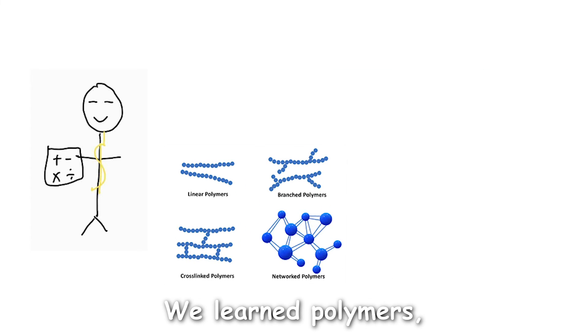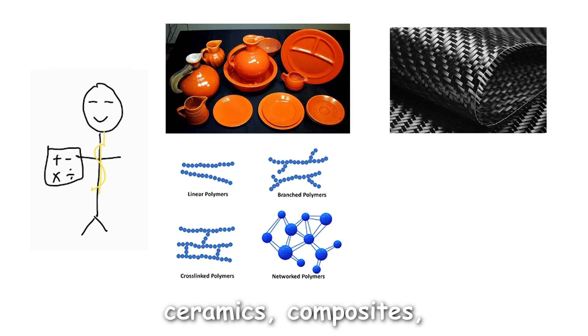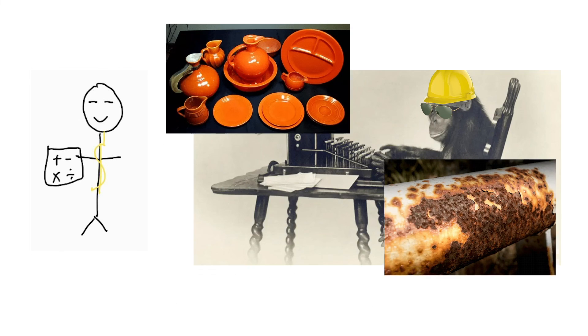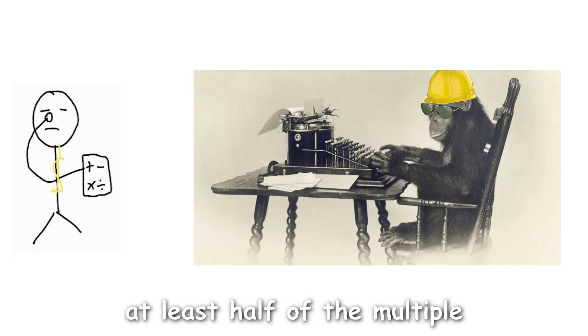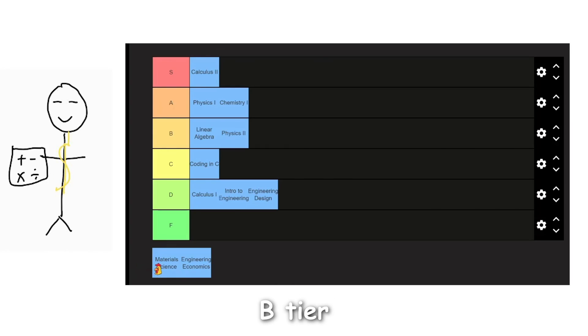We learned polymers, ceramics, composites, and corrosion. To be honest, with this class, you could study as much as you could, and you still wouldn't be able to learn everything in the course. The final exam was one of the most atrocious things I have written because I had to guess at least half of the multiple-choice questions. B tier.